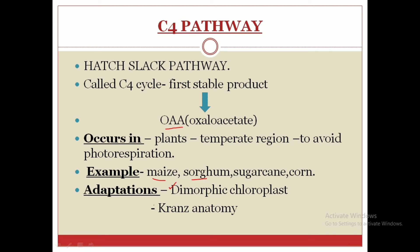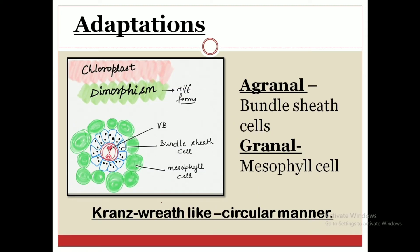The two most important adaptations these plants show for avoiding photorespiration are dimorphic chloroplast and Kranz anatomy. Dimorphic means having two forms — 'di' means two and 'morphic' means form. So chloroplasts having different forms are called dimorphic chloroplasts. There are two types: agranal chloroplasts found in the bundle sheath cells, and granal chloroplasts found in the mesophyll cells. Agranal means a chloroplast devoid of grana.